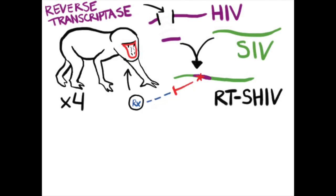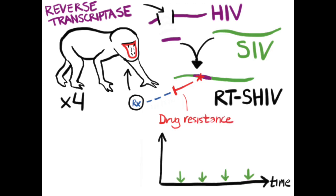When certain mutations happen in this region, the virus can become drug-resistant. We then sampled RT-SHIV from these macaques over the course of treatment to observe if and how drug resistance would emerge.